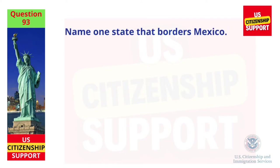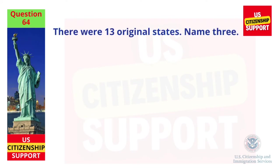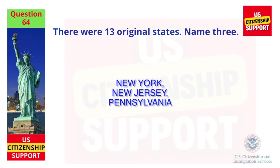Name one state that borders Mexico. California. There were 13 original states — name three. New York, New Jersey, Pennsylvania.